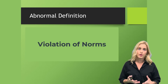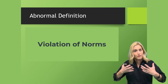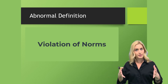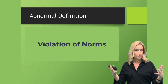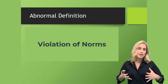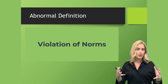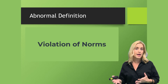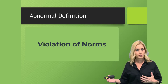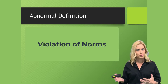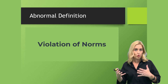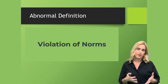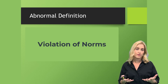Another thing we look for is a violation of norms. We have norms in our societies, and in this class we focus on the norms of the western world, the United States. An example might be going out and shouting at strangers — this isn't something we typically do, so we would see this as abnormal behavior, and if it's happening frequently it fits the criteria.